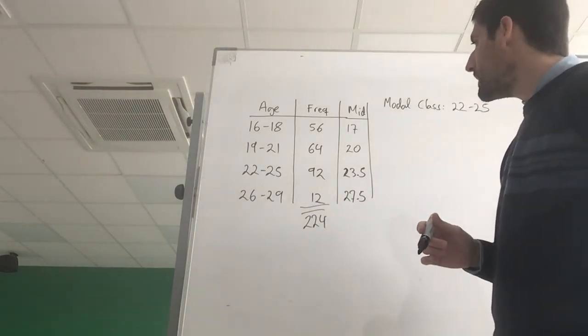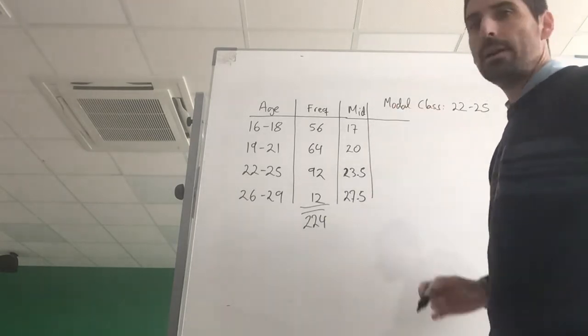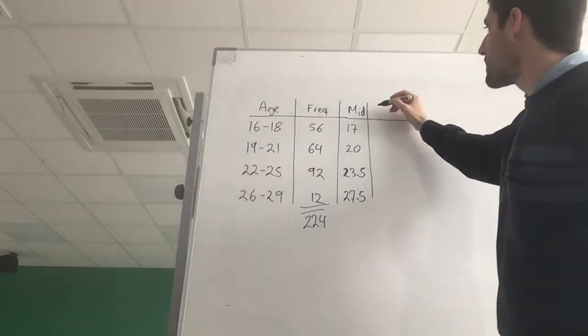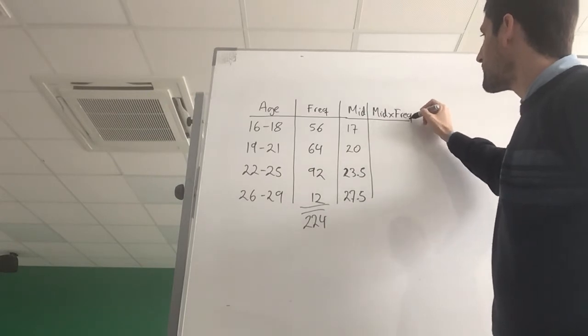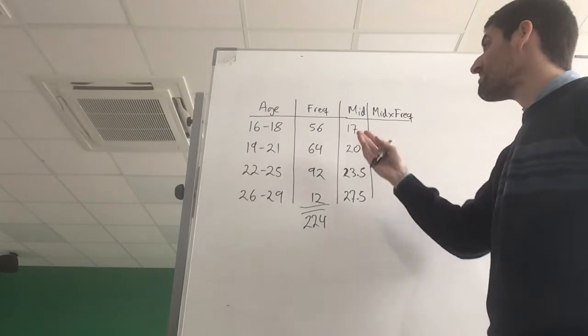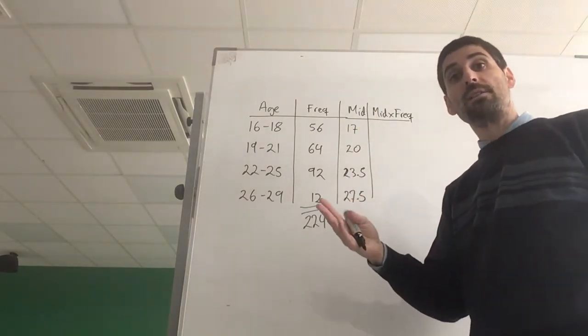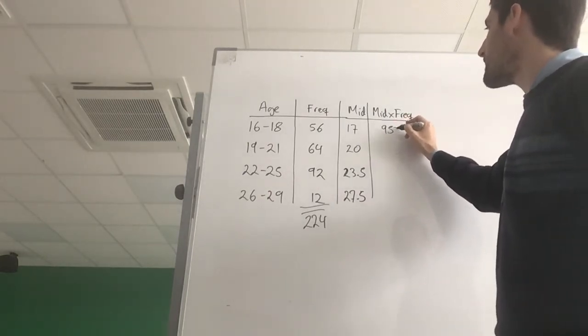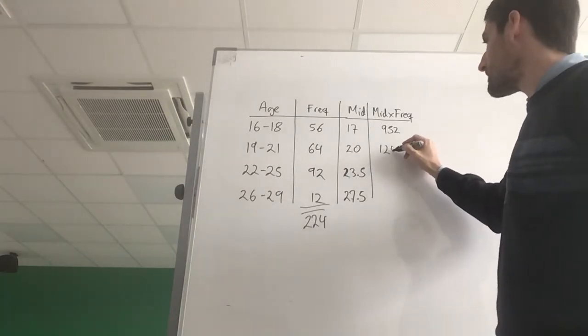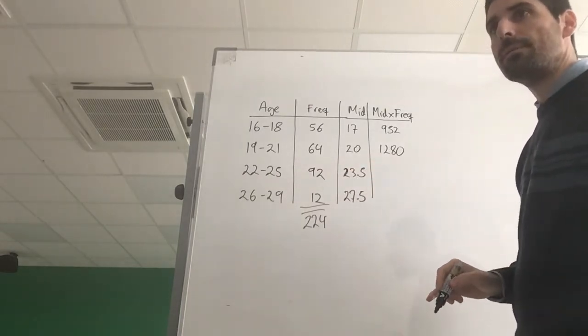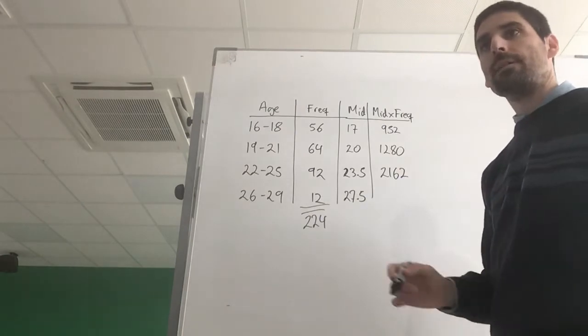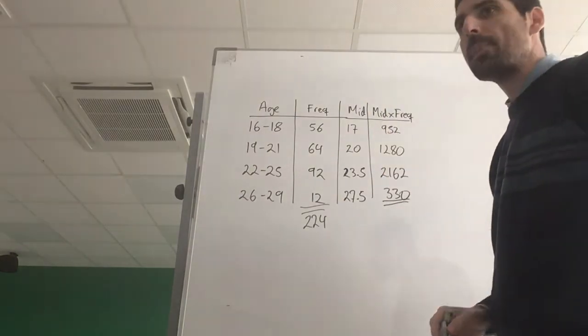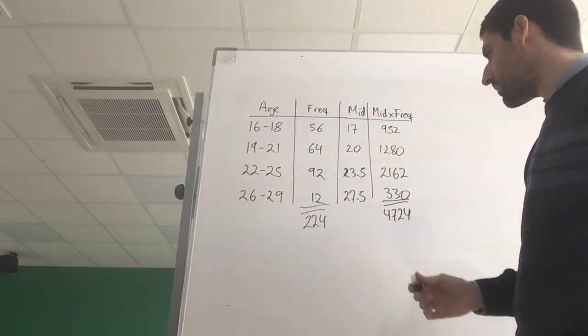Now I need to figure out how many people in total. I've got 224 people. And then we need a new column that is going to be the midpoint times the frequency. Because I've got 56 people I'm assuming they are all 17 years old, so the total of their ages is 56 times 17. So multiply them together and here I get 952. 64 times 20 is 1280. 92 multiplied by 23.5 is 2162. And finally 12 multiplied by 27.5 is 330.